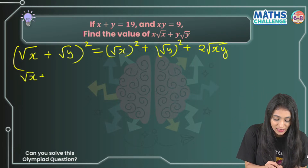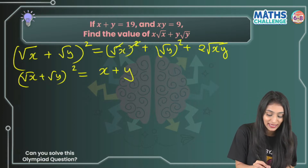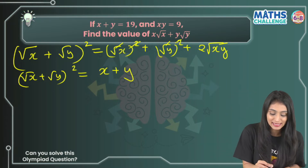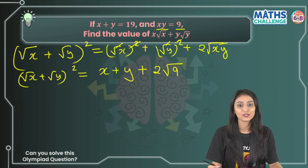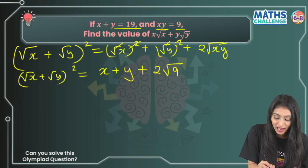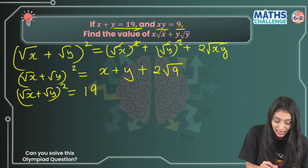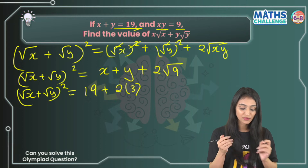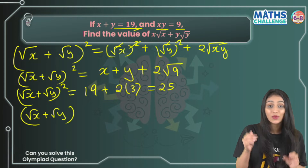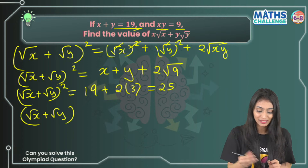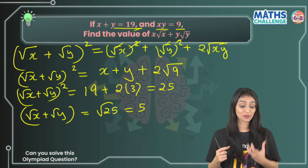So (√x + √y)² equals x plus y, because root and square cancel out. These are the small things where students generally make mistakes. Plus 2 times √(xy) — xy is 9, so √9 is 3. And x plus y we have as 19. So (√x + √y)² equals 19 plus 2 times 3, which gives us 25. That means √x + √y equals √25, which is 5.